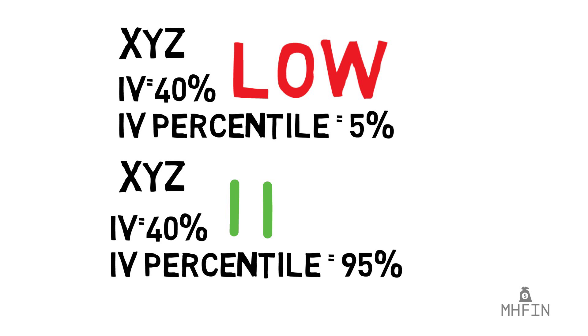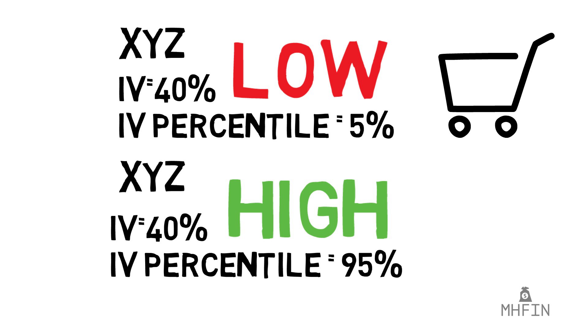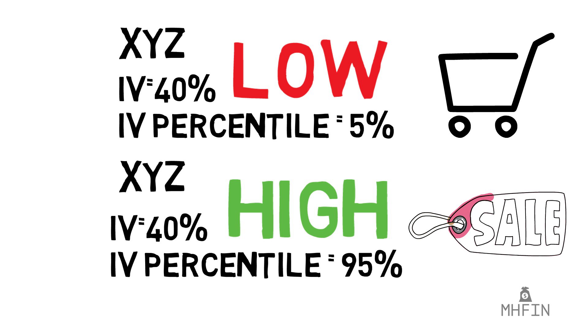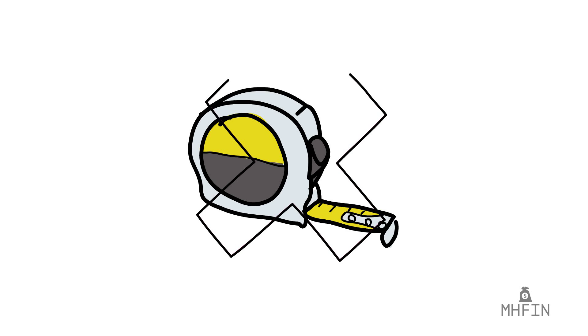Remember the general rule: we want to buy options when IV is low and sell options when IV is high. Obviously this is easier said than done, but many novice traders simply glance over implied volatility without ever understanding it, and by doing so they get crushed trying to make money trading options. This is why understanding whether IV is high or low is so incredibly important, and unfortunately Robinhood doesn't give you the right tools to examine that.